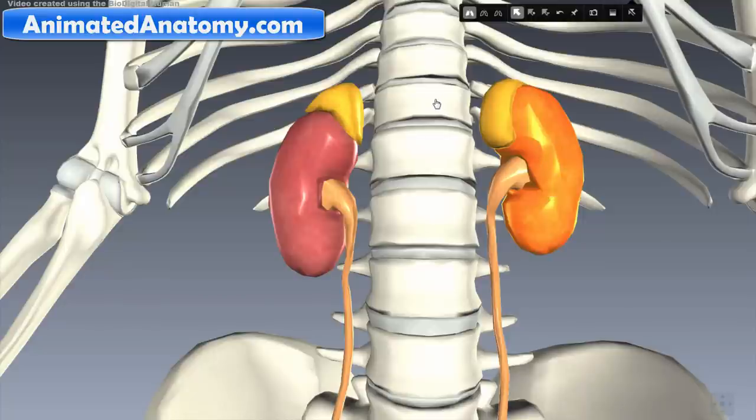The left kidney normally goes from the twelfth thoracic vertebra all the way to the third lumbar vertebra. While the right one is always slightly lower.